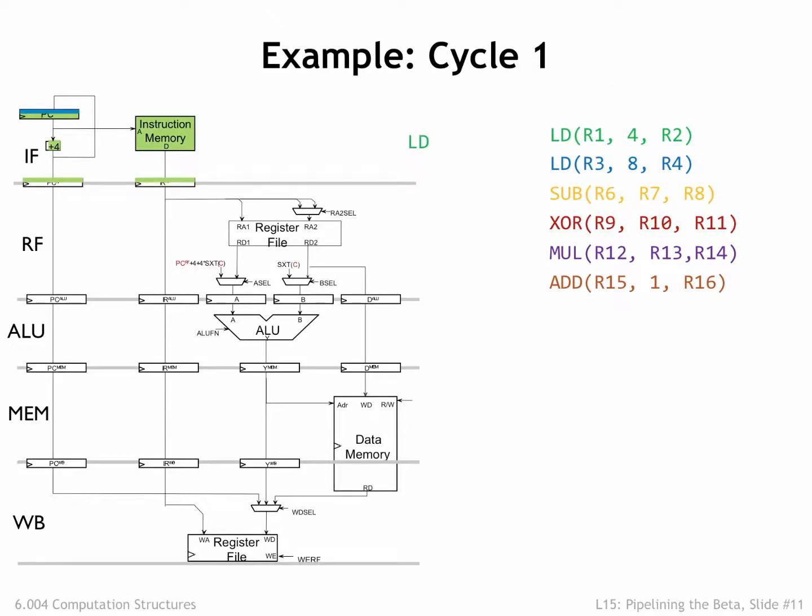During cycle 1, the IF stage sends the value from the program counter to main memory to fetch the first instruction, the green load instruction, which will be stored in the RF stage instruction register at the end of the cycle. Meanwhile, it's also computing PC plus 4, which will be the next value of the program counter. We've colored the next value blue to indicate that it's the address of the blue instruction in the sequence. We'll add the appropriately colored label on the right of each pipeline stage to indicate which instruction the stage is processing.